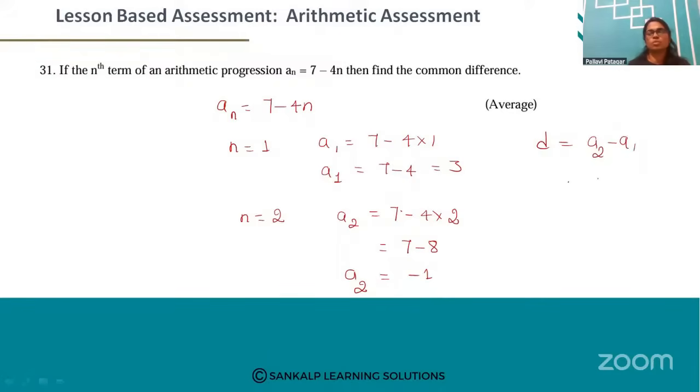So this is equal to minus 1 minus 3, which is equal to minus 4. Therefore, the common difference is minus 4.